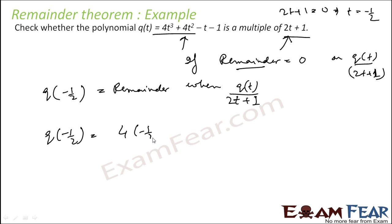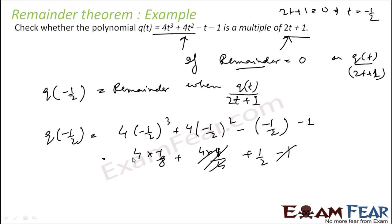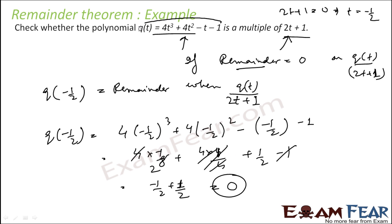Let's find the remainder: q(-1/2) = 4(-1/2)³ + 4(-1/2)² - (-1/2) - 1. That is 4 × (-1/8) + 4 × (1/4) + 1/2 - 1, which gives -1/2 + 1 + 1/2 - 1. These terms cancel: (-1/2 + 1/2) = 0 and (1 - 1) = 0, so q(-1/2) = 0. Since the remainder is zero, q(t) is a multiple of 2t + 1.